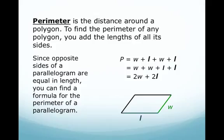Since the opposite sides of a parallelogram are equal in length, you can find a formula for the perimeter of a parallelogram. P equals w plus l plus w plus l. When you use the commutative property, you'll get w plus w plus l plus l. And then when you combine like terms, you get 2w plus 2l.